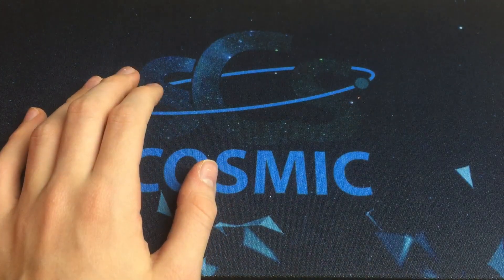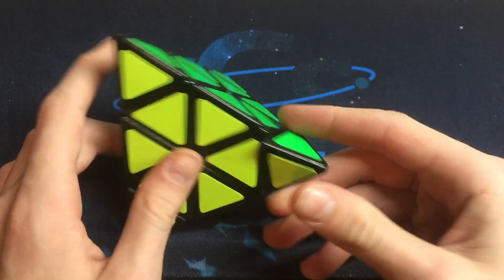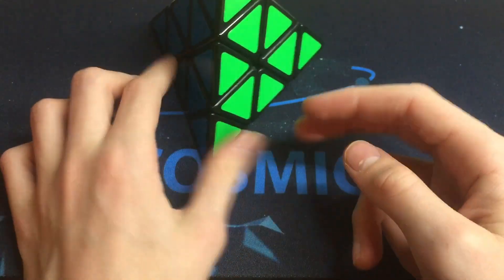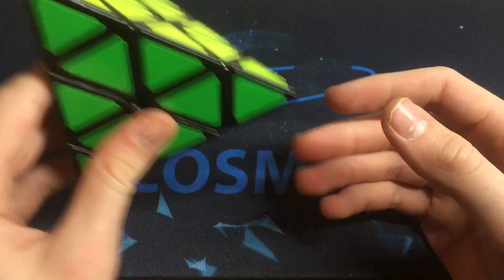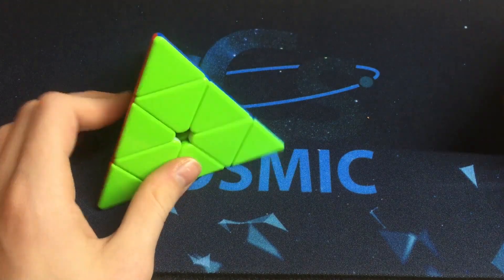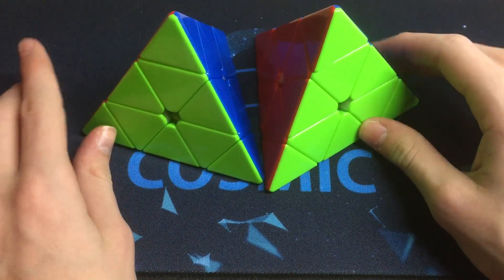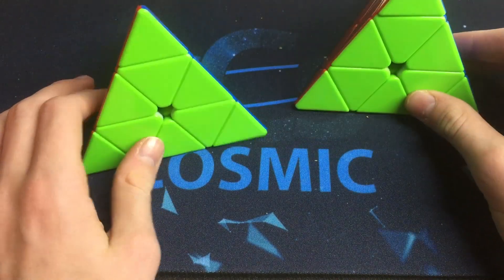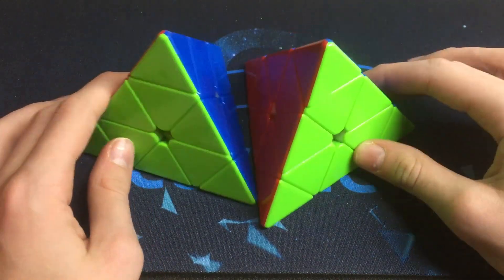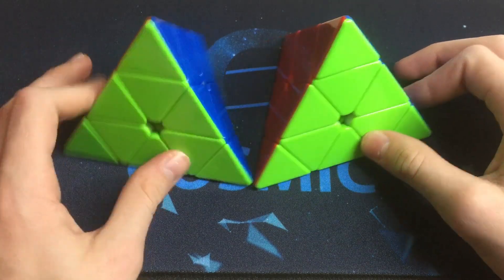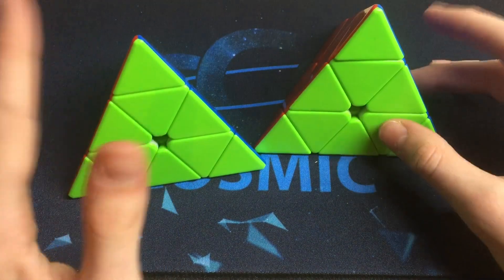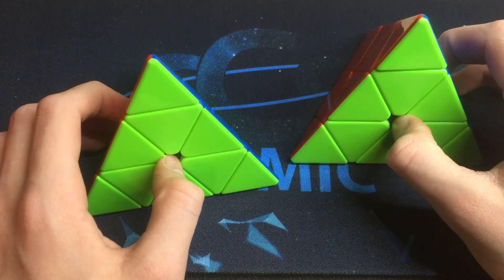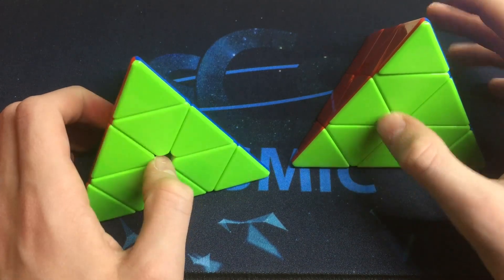So, we move on to Pyraminx now. I only have 3 of these. This is the Moyu Pyraminx. I don't use this. It's very bad now. It has this ball bearing design. This is a QiYi Bell. This is also a QiYi Bell. I have 2 of these. One of these actually was from my brother. These are the only Pyraminx that I have that are good. Unlike the Moyu, which is not. I don't practice Pyraminx. I got into it once, but I don't like it anymore.